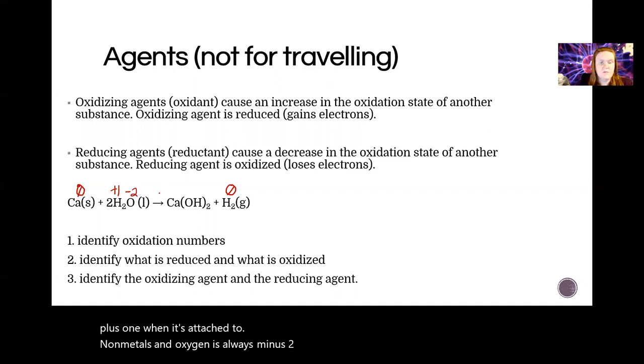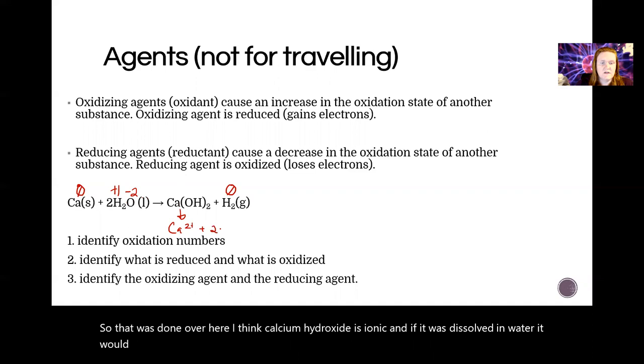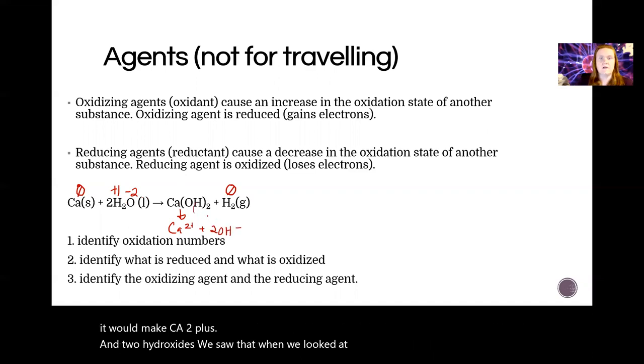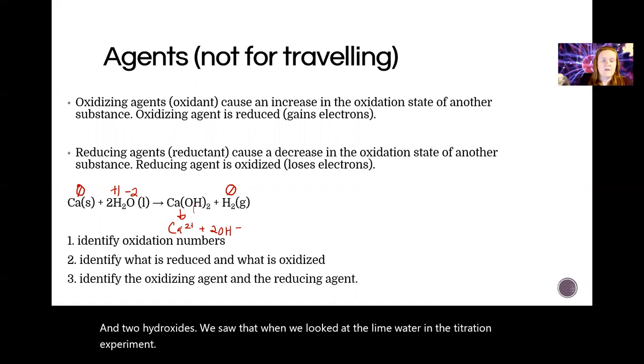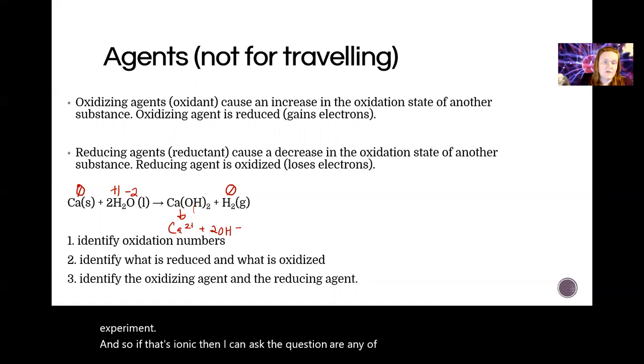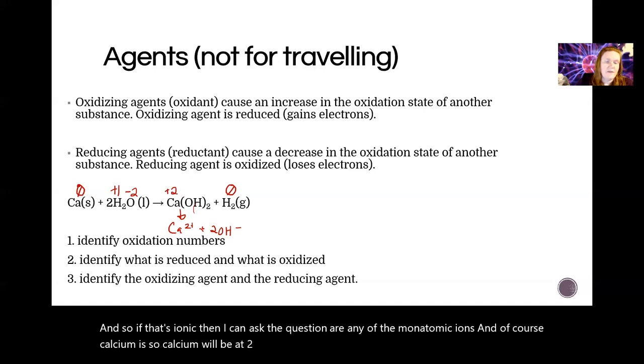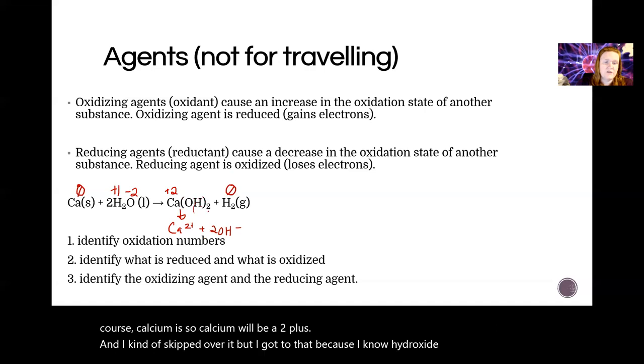Calcium hydroxide is ionic, and if it was dissolved in water it would make Ca²⁺ and 2 hydroxide - we saw that in the lime water titration experiment. If that's ionic, then I can ask if any of them are monatomic ions, and calcium is, so calcium will be a +2.